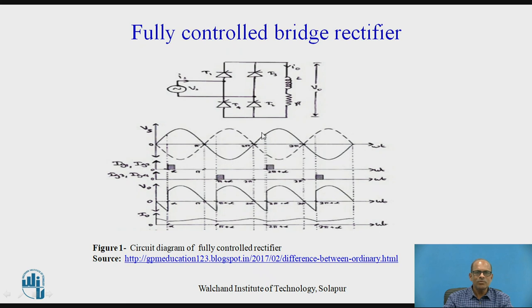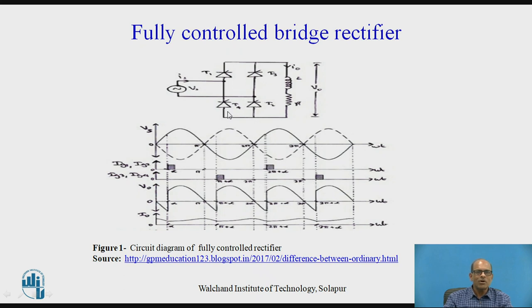This is the input voltage. IG1 and IG2 are the gate pulses for SCRs 1 and 2, which are forward biased in the positive half cycle of input and therefore gated together. These are the gate pulses for SCR 3 and 4, which are forward biased in the negative half cycle of input.